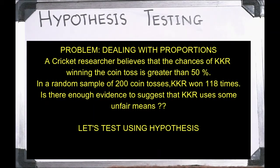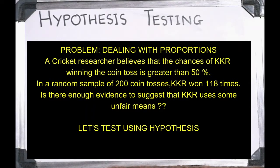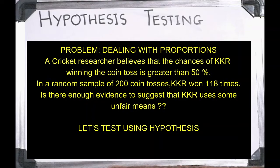If you carefully go through the question, the null hypothesis is P equals 0.50 — that is, the proportion of KKR winning the toss is 50%, which is the currently accepted value. The researcher is claiming it is not the same; KKR has a chance of more than 50% of winning. So the alternate hypothesis would be P greater than 0.50. This is a classic example of a one-tail test because the alternative hypothesis claims KKR's winning chance is more than 50%.